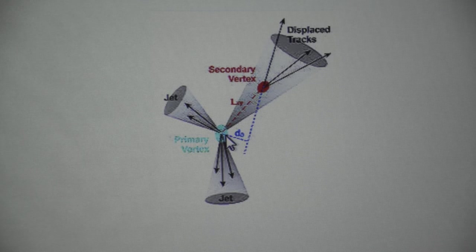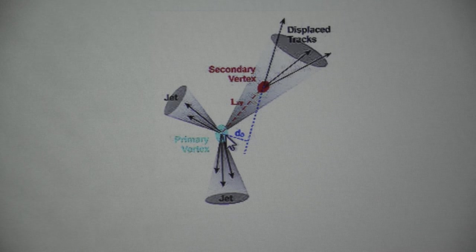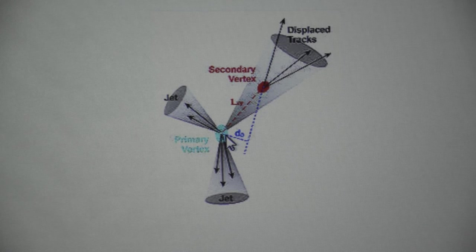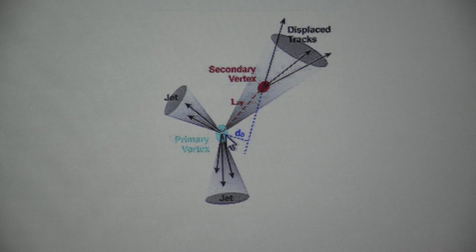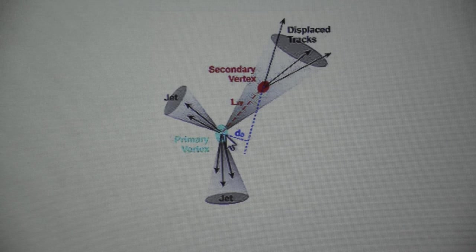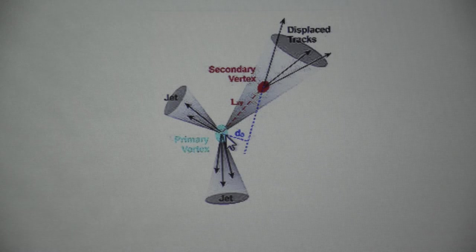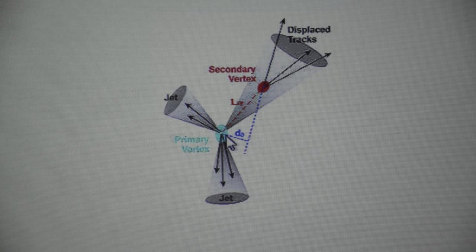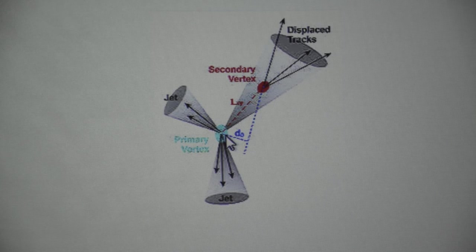With all this control, you still don't see any new signal. So, whatever is there must be having a fantastically small cross section. Well, not really. Sometimes you have the so-called compressed spectrum which means that the particles which are produced have their mass roughly degenerate with each other. Then the mother will decay into a daughter which has roughly the same mass.